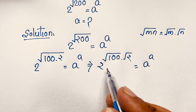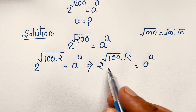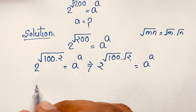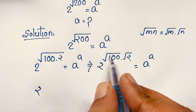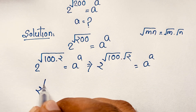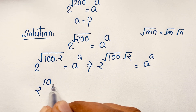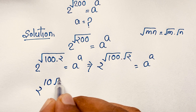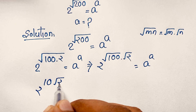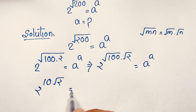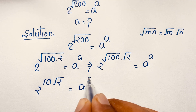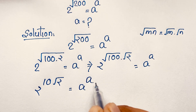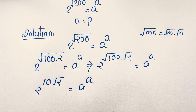Now, in this exponential case, you can see 2 to the power √100 — √100 is 10. So we get 2 to the power 10√2, and this equals a to the power a. I solved this question step by step.